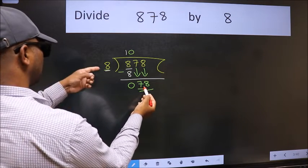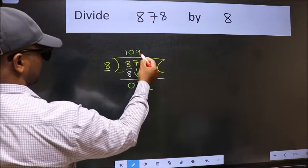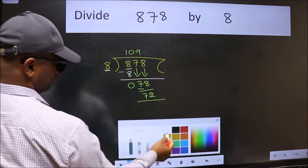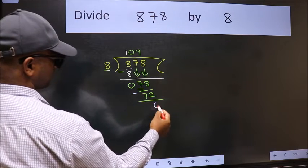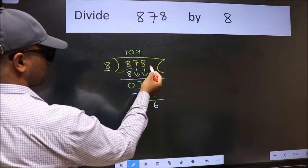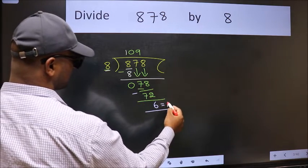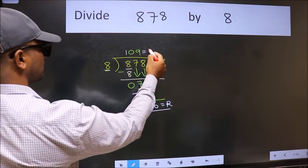A number close to 78 in the 8 table is 8 nines 72. Now we should subtract. We get 6. No more numbers to bring it down. So we stop here. This is our remainder and this is our quotient.